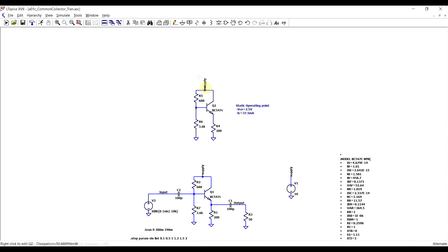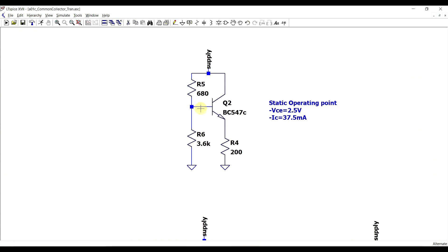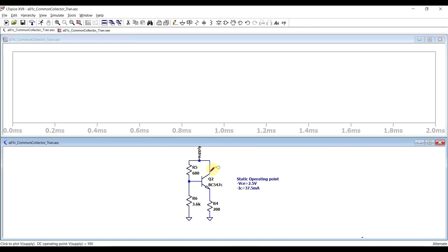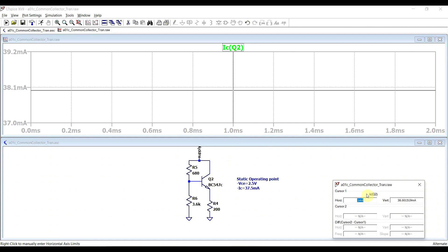We can do this by simply making the base resistor divider using smaller resistors. I've chosen a 680 ohm resistor and the 3.6 kiloohm one. First things first, we can check that we have the same DC operating point. Our collector current is 38 milliamps.